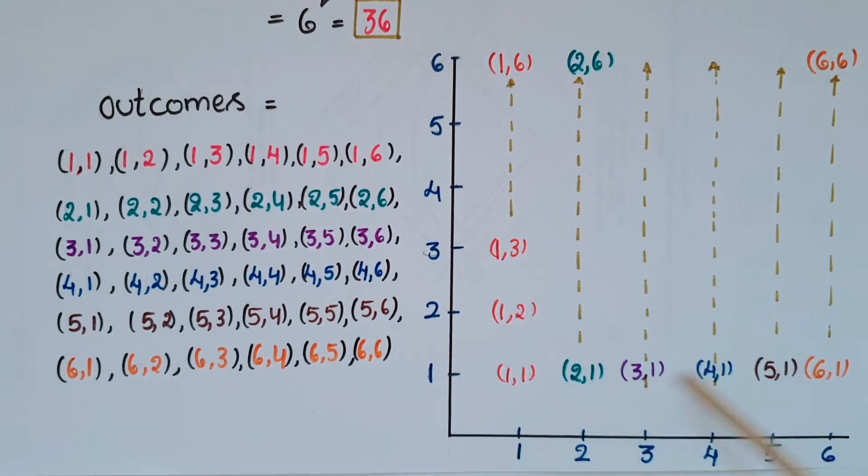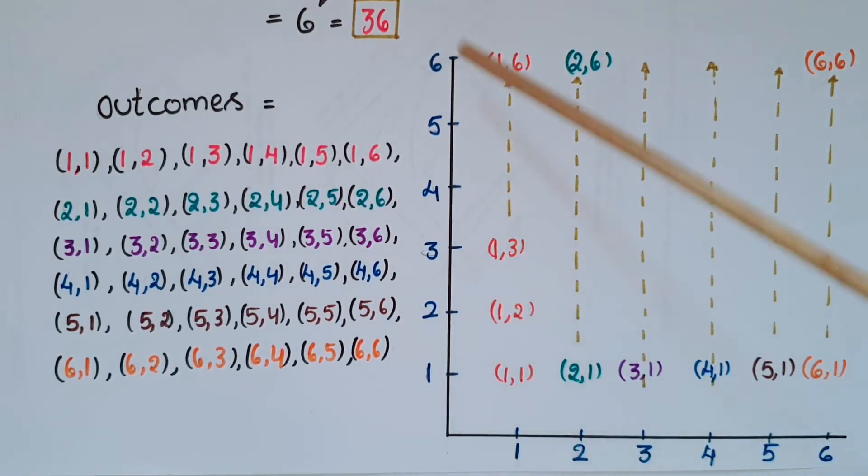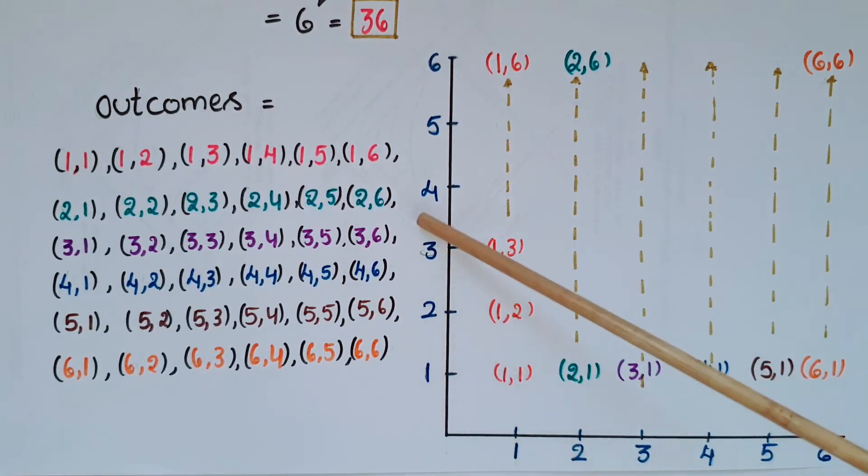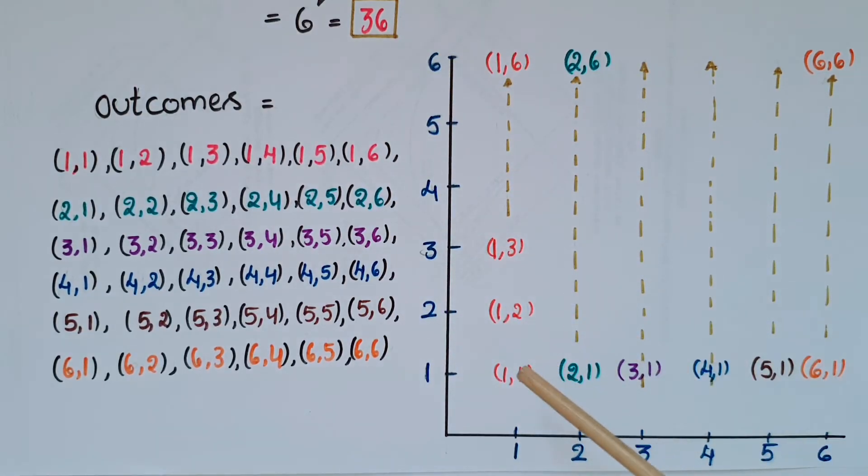For this, draw a horizontal line and show 1, 2, 3, 4, 5, 6 and draw a vertical line like this and show 1, 2, 3, 4, 5, 6 and start writing outcomes like this.